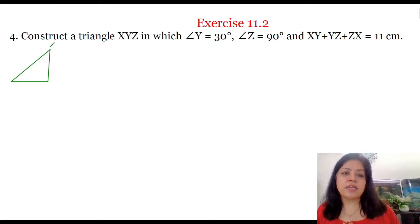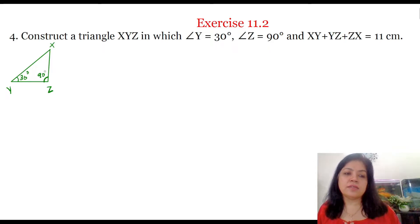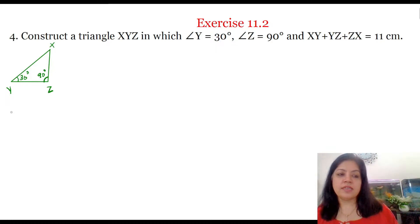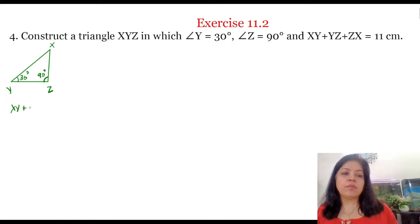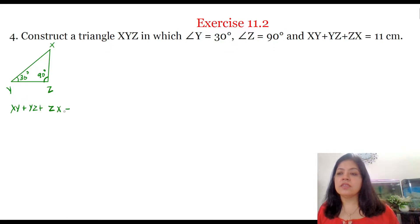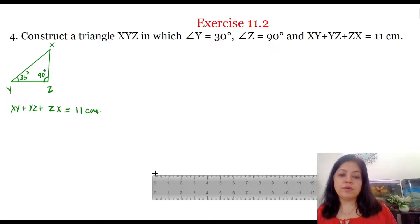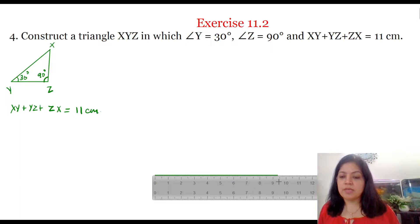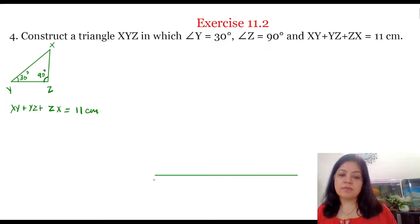This is the triangle XYZ where angle Y is equal to 30 degrees, angle Z is equal to 90 degrees, and the sum of the three sides XY plus YZ plus ZX is equal to 11 centimeters. Now let us start the construction. We'll first draw a line segment equal to 11 centimeters — that is the sum of all three sides. Let this line segment be AB equal to 11 centimeters.